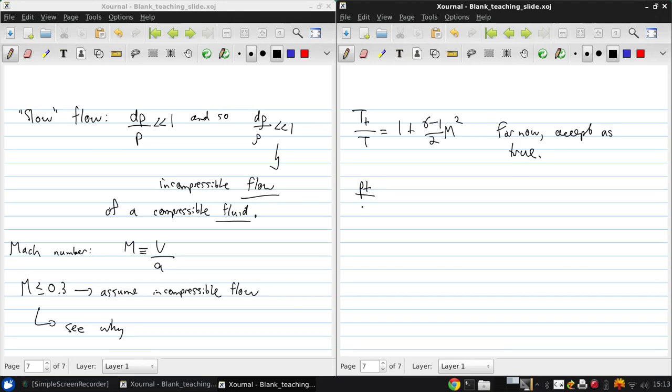So then for an isentropic flow, P_t over P equals (T_t over T) to the power of gamma over (gamma minus 1). So we can substitute the above expression in here.